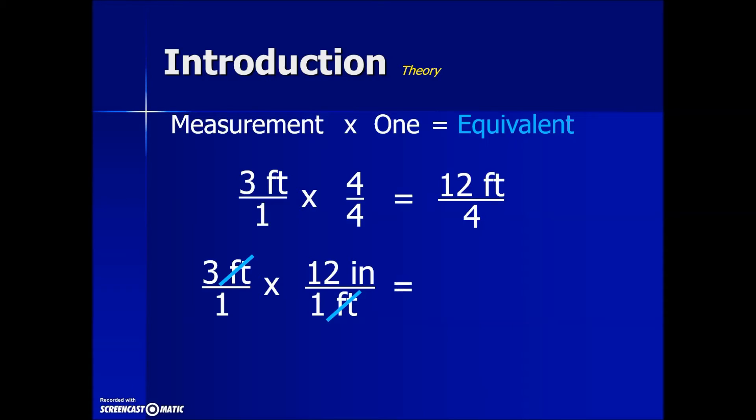Now go ahead with the multiplication of these two fractions. We have 3 times 12 inches in the numerator and 1 times 1 in the denominator. Simplifying, we end up with 36 inches over 1, an equivalent value for the 3 feet, or just 36 inches.